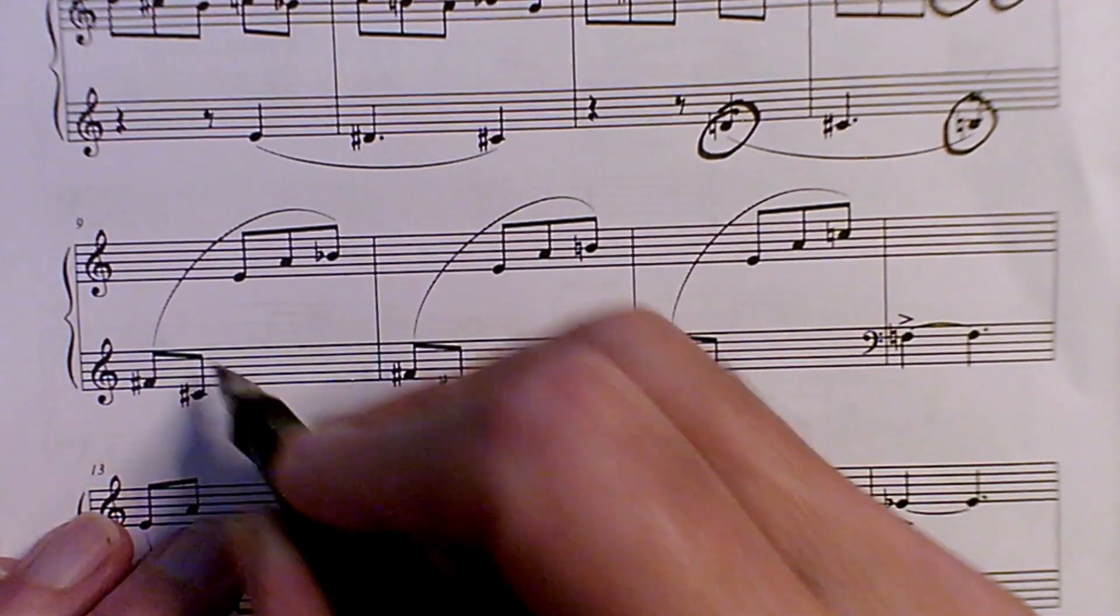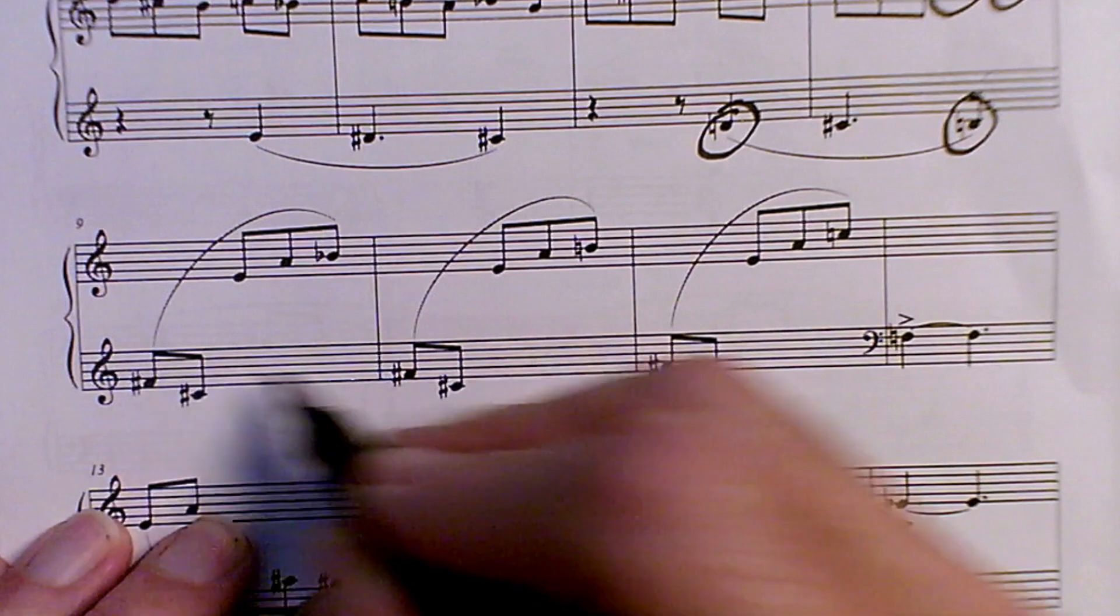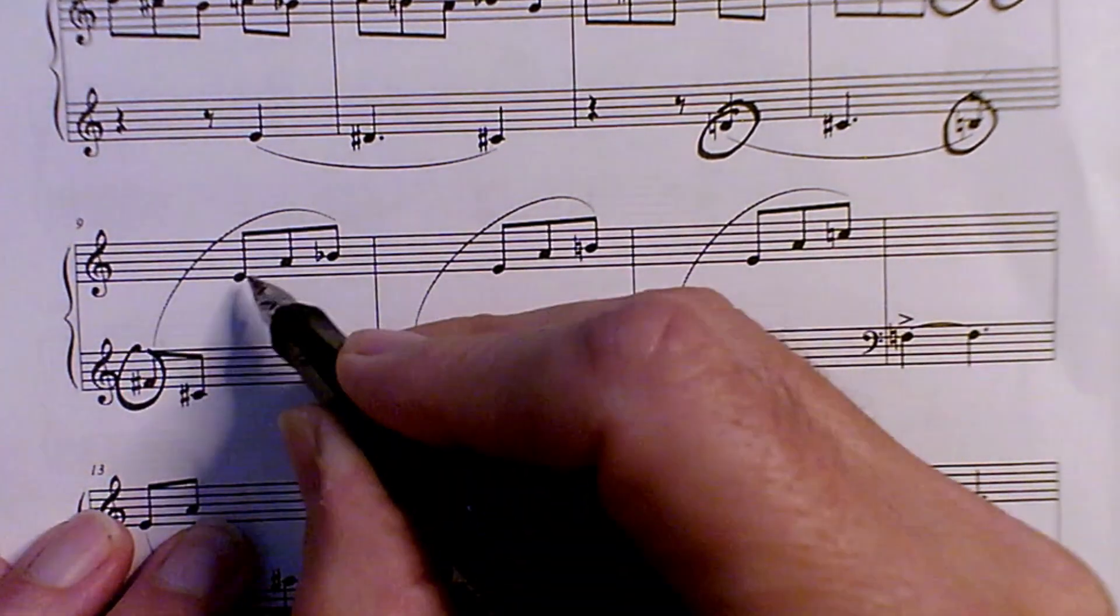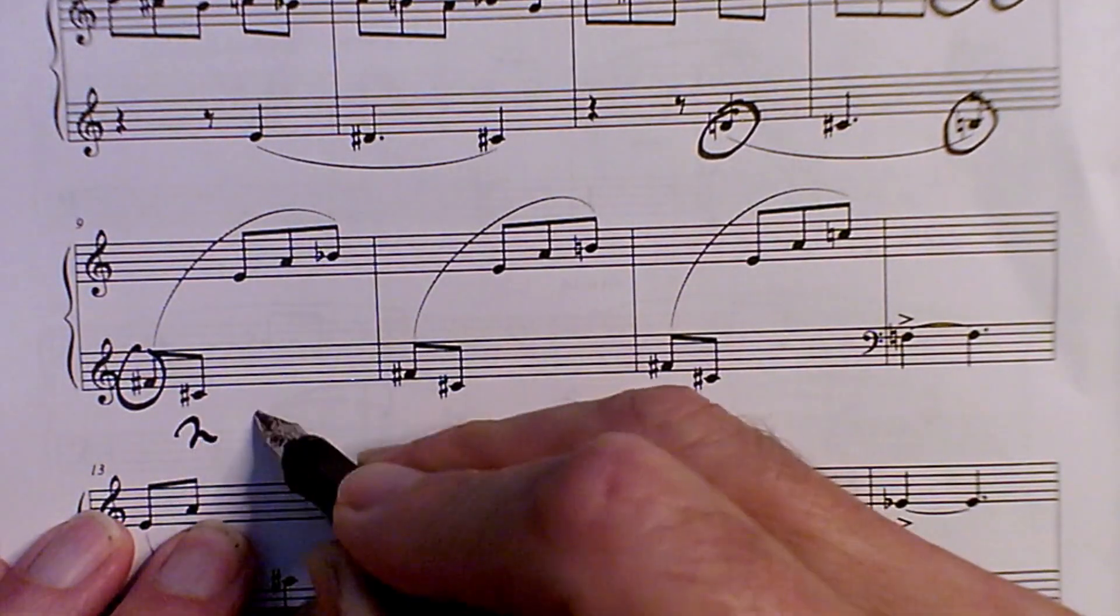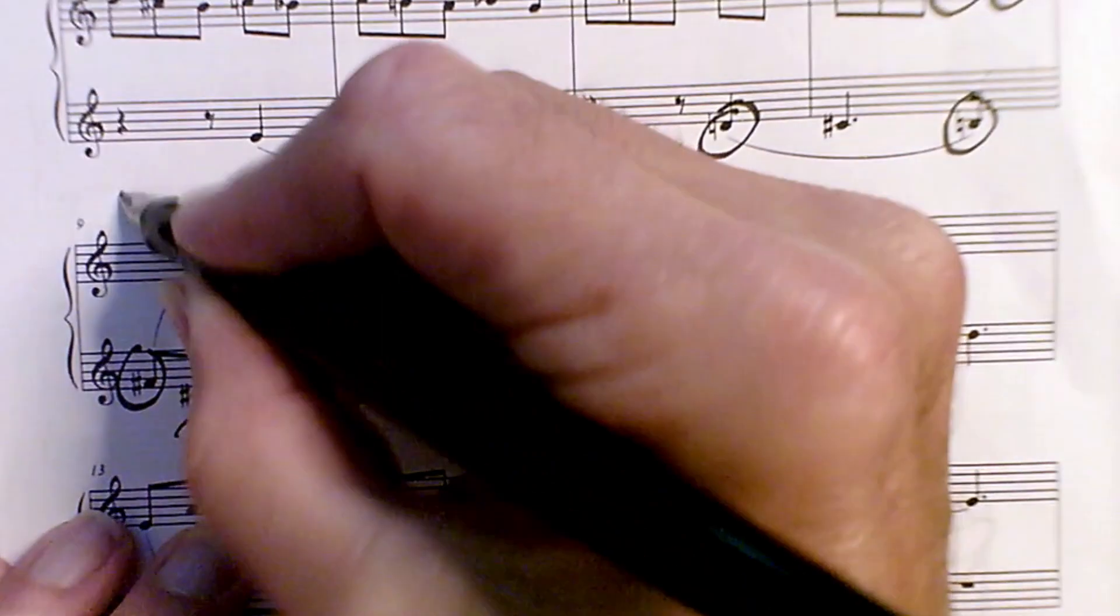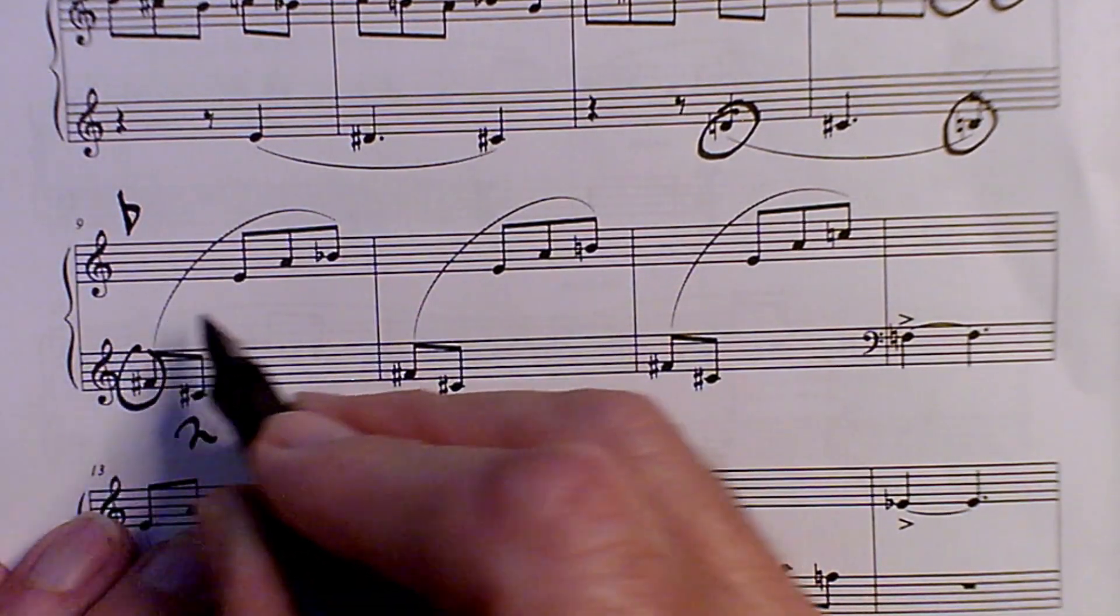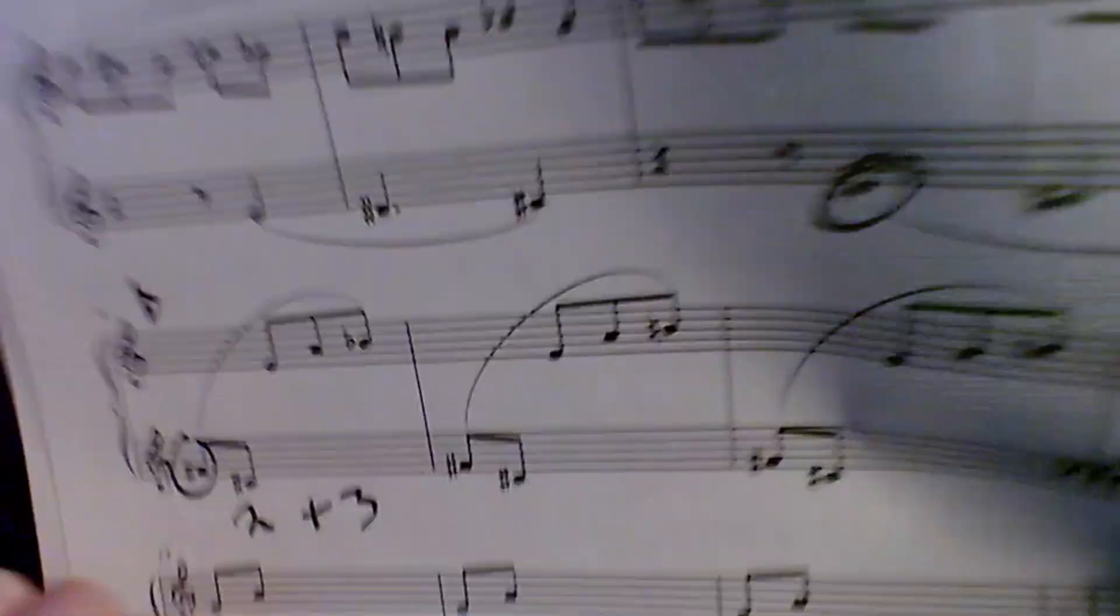Now moving on to measure 9, the pitches and motivic elements change, so we have a different section. We can see that F sharp becomes a prominent pitch. We can also see that the groupings are no longer 3 plus 2, but now 2 plus 3. So we'll call this a B section. I think it's probably best explained as a bridging section, and we'll try to explain that in more detail when we come back to it.